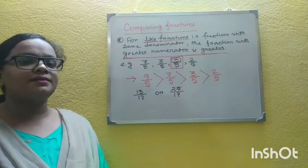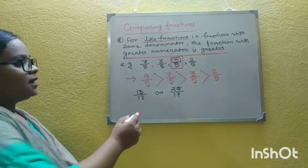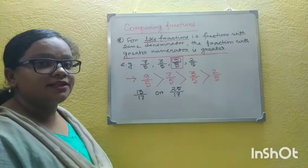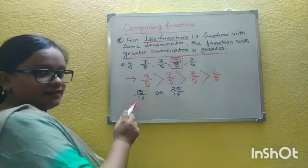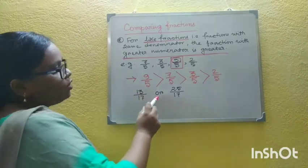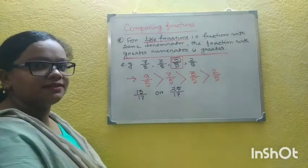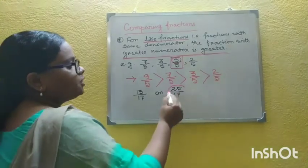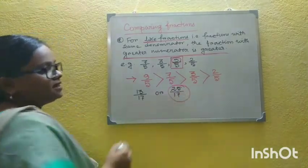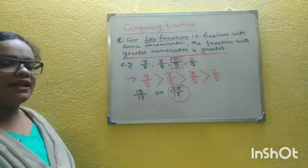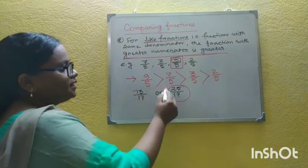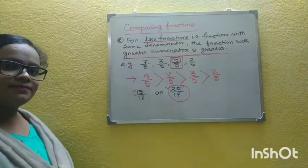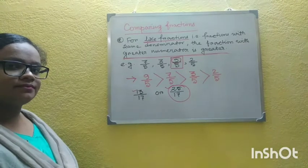Now tell me, among these two fractions, which one is greater: 13/17 or 25/17? The answer is 25/17, because if you compare the numerators, 25 is greater than 13.